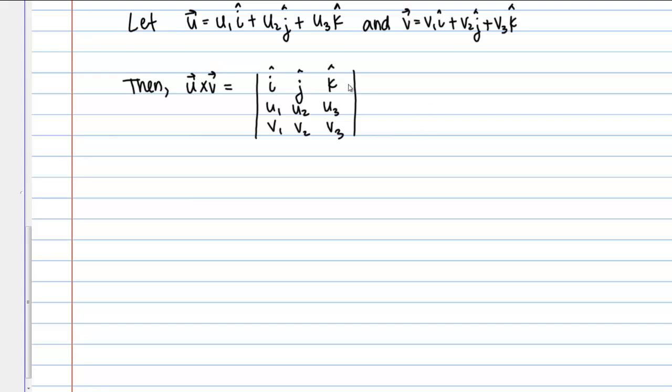So the way this matrix is set up, this U cross V matrix, is first of all in this first row you'll see I have the coordinate unit vectors i, j, k. And then in the next row I have the components of vector U, which is the first vector in your cross product: U1, U2, U3. And then in the final row I have the components of vector V: V1, V2, V3. So you'll always set up your matrix like this if you want to use it to find the cross product.